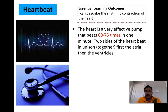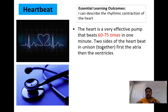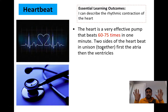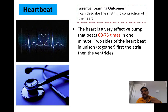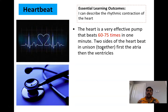Two sides of the heart beat at the same time. We have the left and the right side of the heart, but we also have the atria and the ventricles — the top chambers and the bottom chambers. The two sides of the heart beat in unison. The atria are going to pump first, left and right, and then the ventricles are going to pump next, left and right.